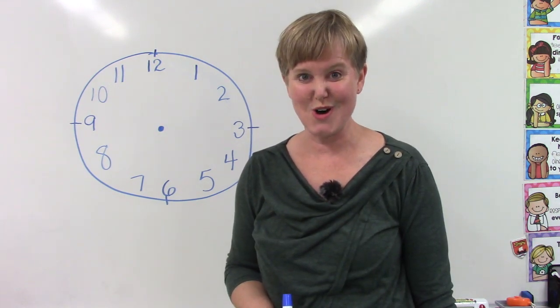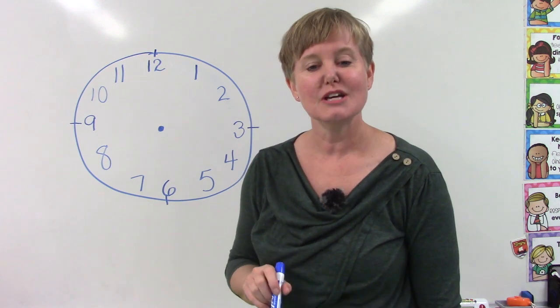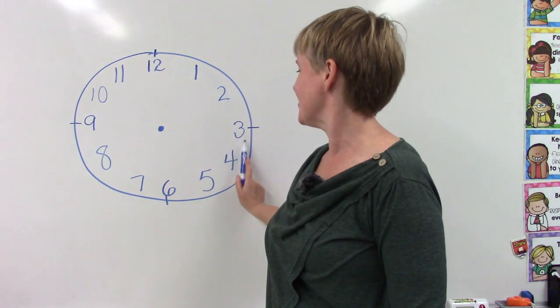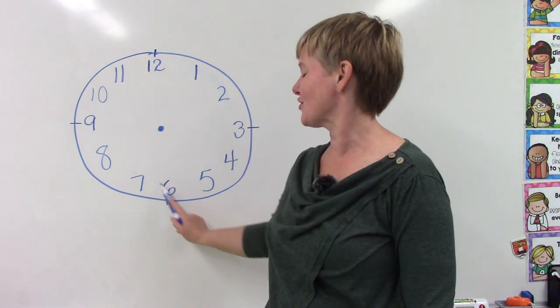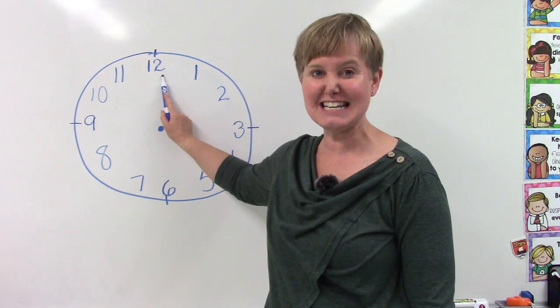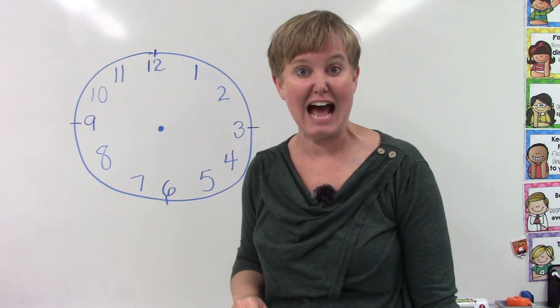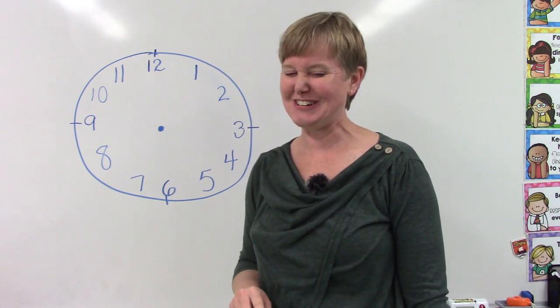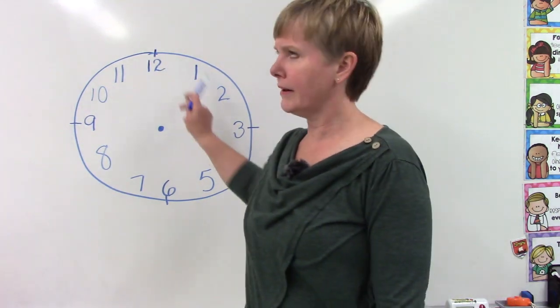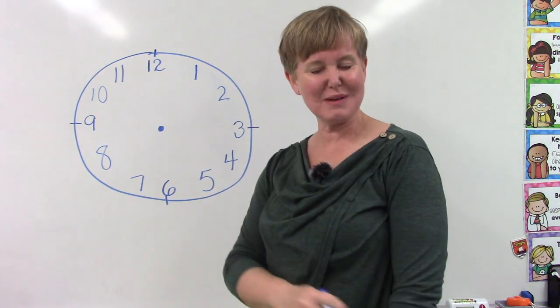Now that you have all the numbers written on your clock, I would like for you to start here and we're gonna count by 5. 5, 10, 15, 20, 25, 30, 35, 40, 45, 50, 55, 60. Do you remember how many minutes are in an hour? You're right. There are 60 minutes. What number did we just get to when we counted by 5? We got to 60.